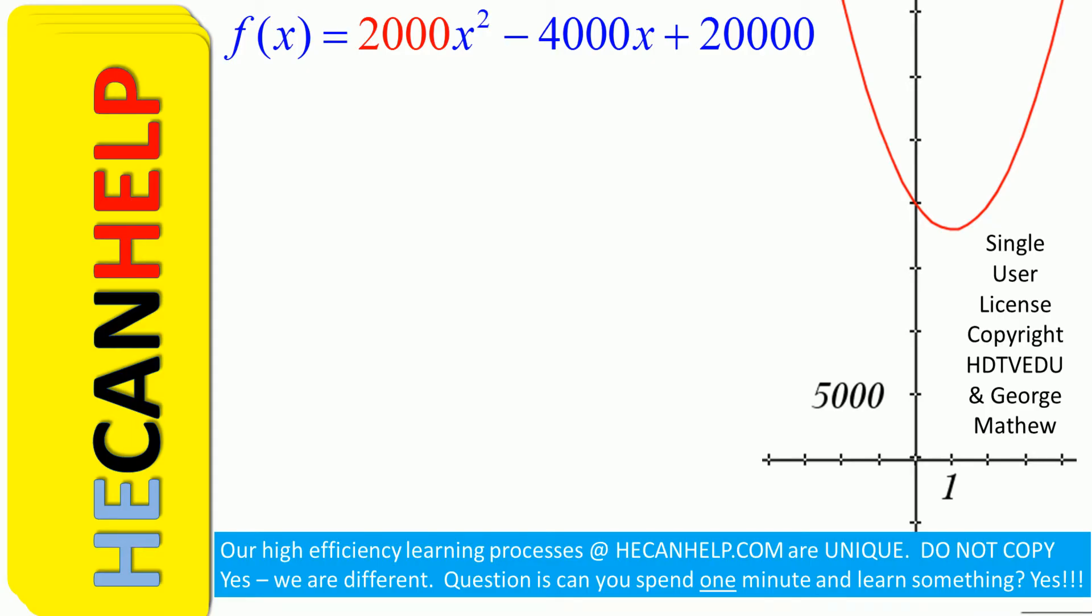Our function is f of x equals 2000x squared minus 4000x plus 20,000. Compare that with f of x equals y, which equals ax squared plus bx plus c. Immediately you see that a equals 2000, b equals negative 4000.